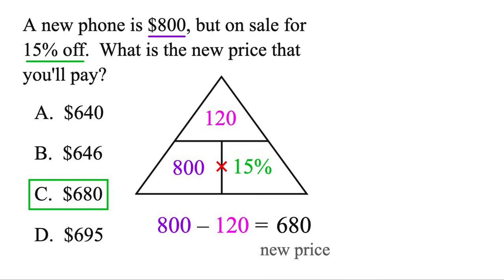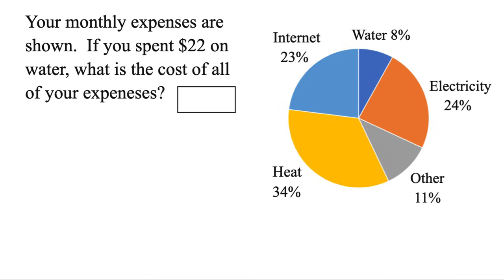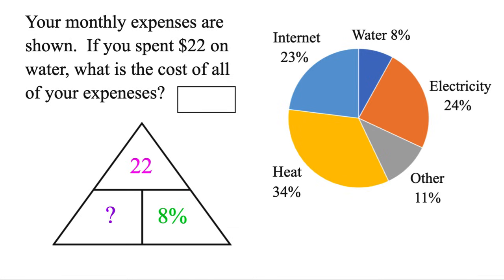Okay, let's check out another style. Your monthly expenses are shown. If you spend $22 on water, what is the cost of all your expenses? Well, we know we spend $22 on water, and water is 8%. As soon as we have a percent, we'll do our triangle. But the question is, is $22 part of the cost or the whole cost? Well that's just part of the cost, so we'll put it up top. And then we know that represents 8%, we'll put that there. And we're looking for the total or the whole.